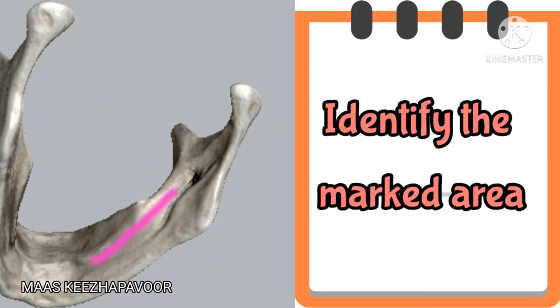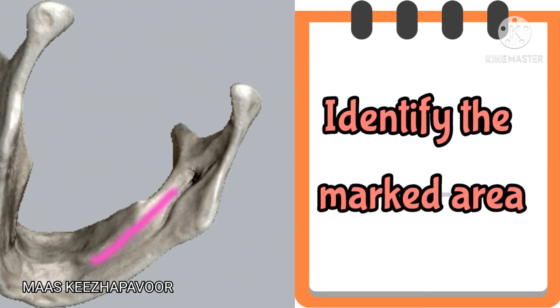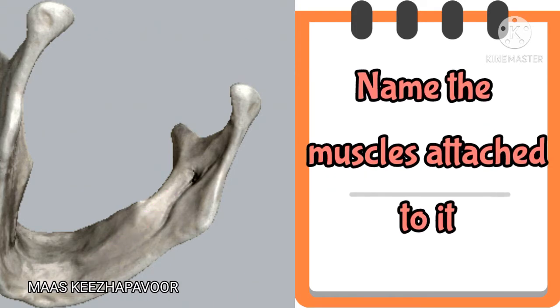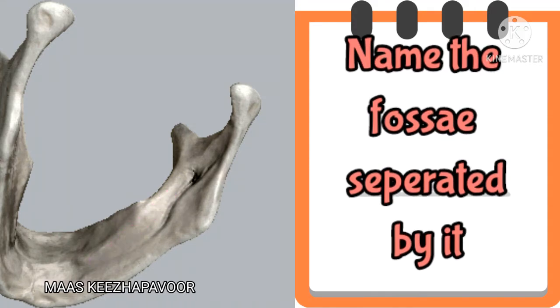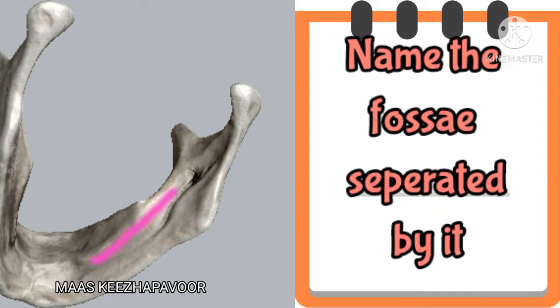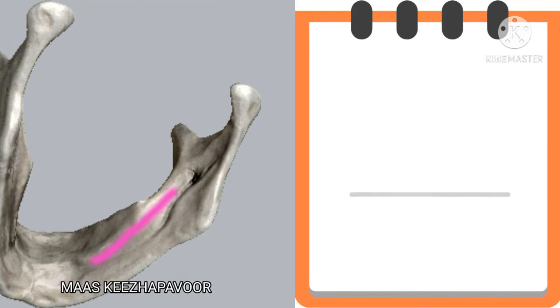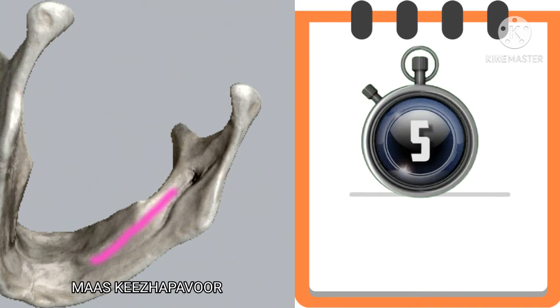Identify the marked area, name the muscles attached to it, and name the fossae separated by it.